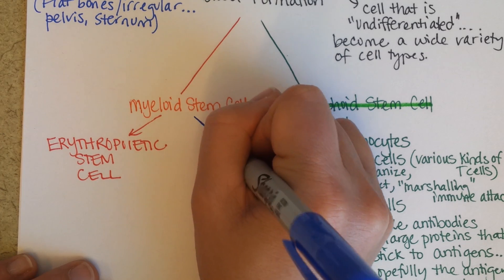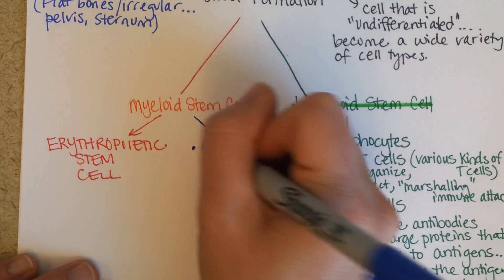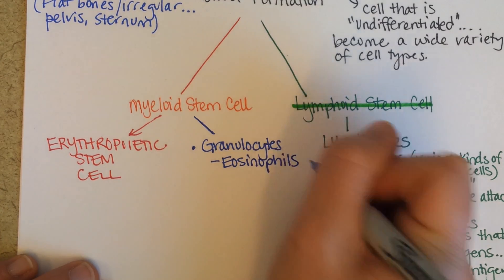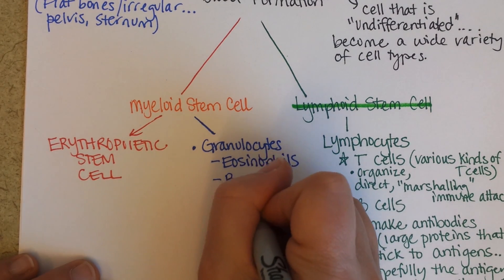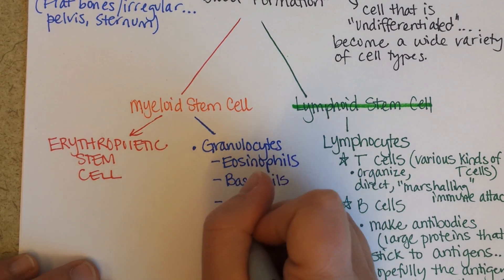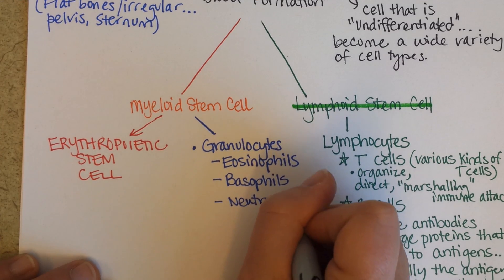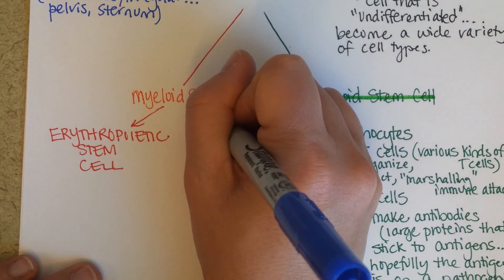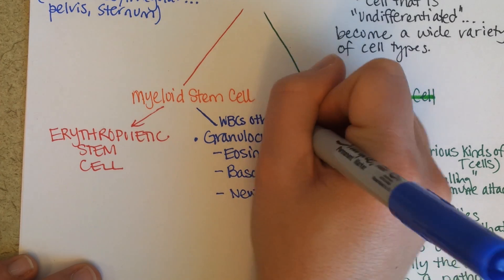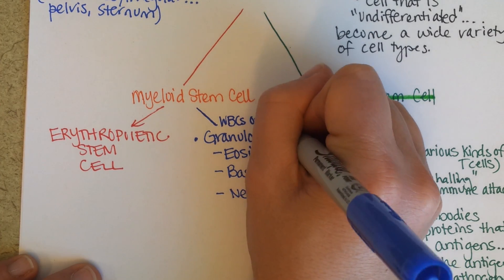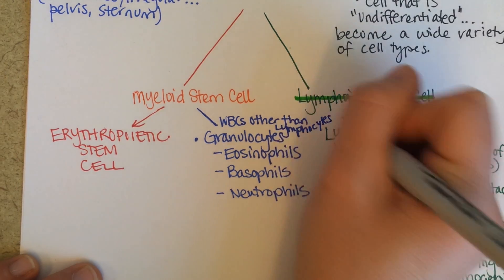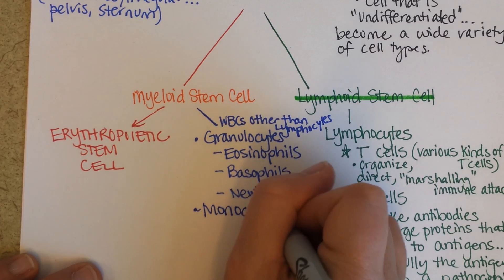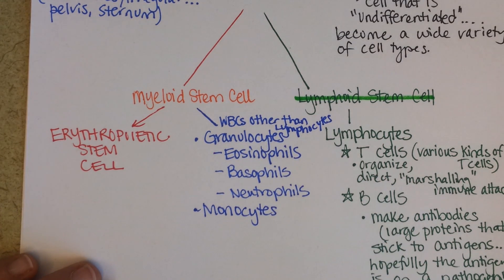The myeloid line can become granulocytes — which would be eosinophils, basophils, or neutrophils, all of which are important white blood cells — or white blood cells other than lymphocytes, which would include monocytes. Remember, those are the ones that when activated become phagocytic macrophages.